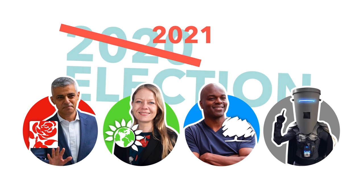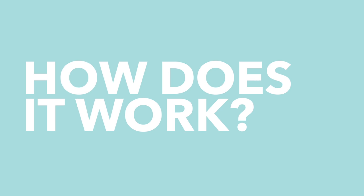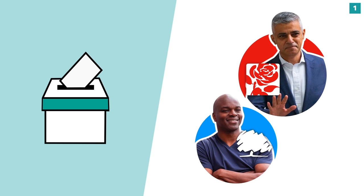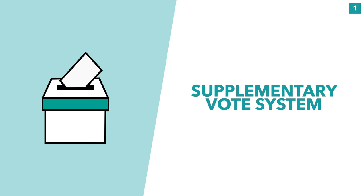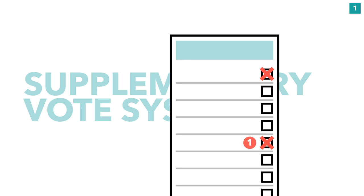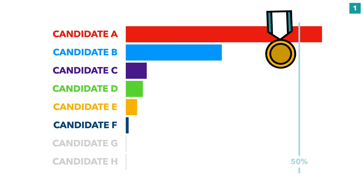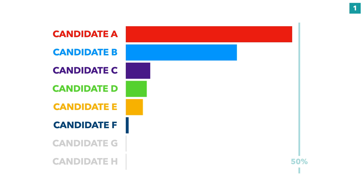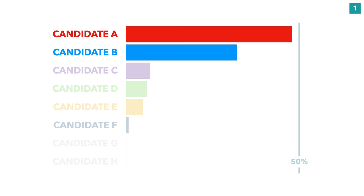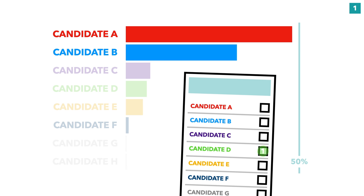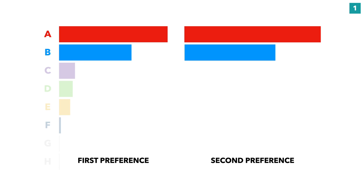Before we delve into the 2021 race, it's worth looking at how the system actually works in these elections. The mayor is ultimately elected based on a supplementary vote system, where each voter has two votes — a first and second preference. If any given candidate manages to receive more than 50% of all first preference votes, then they're immediately elected. If no one secures a majority, all candidates barring the top two based on first preferences are eliminated. The second preference votes of those who first voted for a now eliminated candidate are then added to the count of the two candidates still in the running.